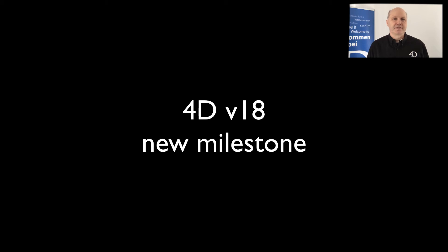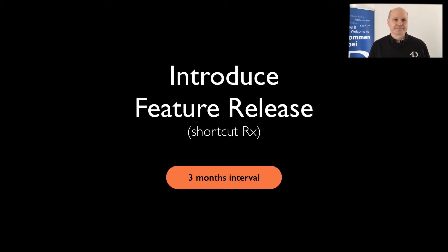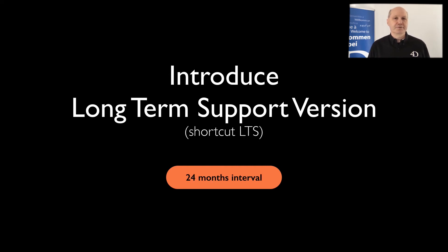With 4DV18, we are ready for the next big change in our product release strategy. We keep a 3-month cycle for feature releases. To make it more clear, we now name these versions Feature Release, keeping R2 and R3 only as a shortcut. And we introduce a long-term support release — LTS — with a 24-month release cycle, giving conservative customers more time.